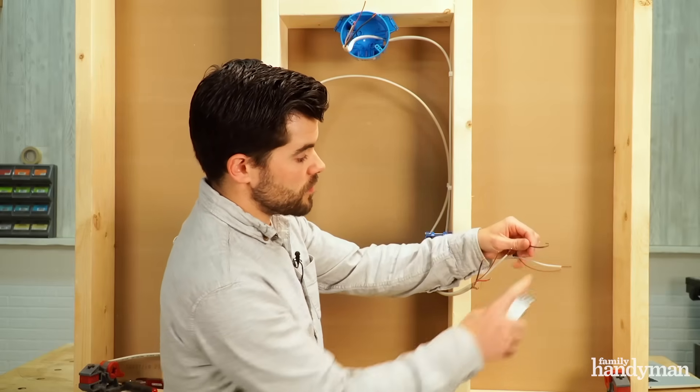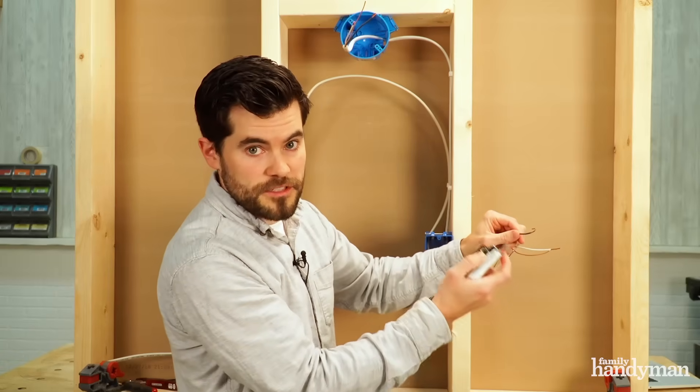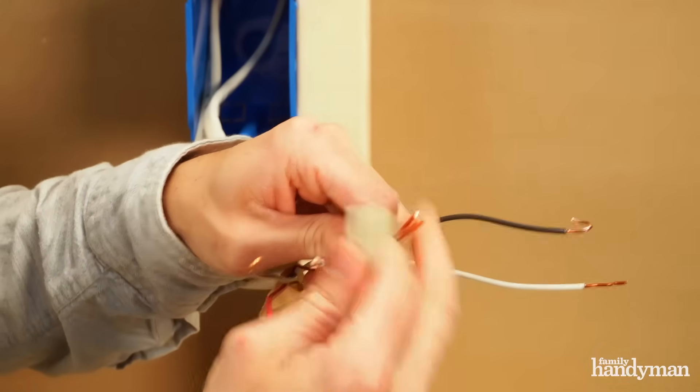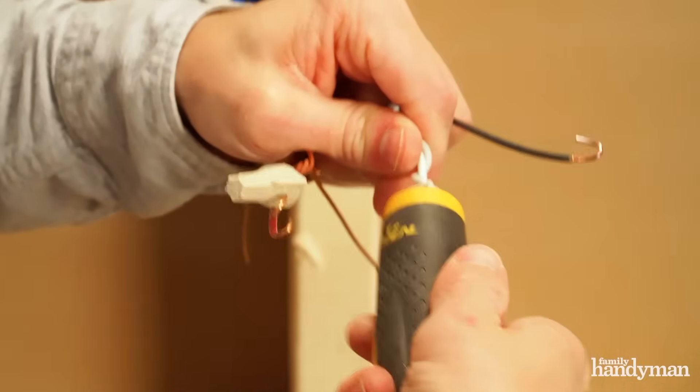We need to make sure though that the black wire going to our light is attached to our common terminal. But first, just like the first switch, we're going to start with the ground wires. We gather the grounds and we gather the neutrals.